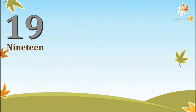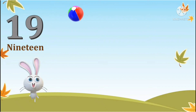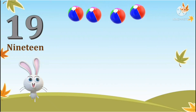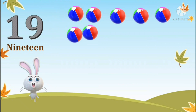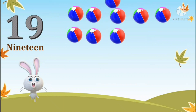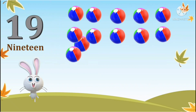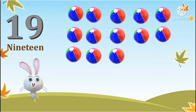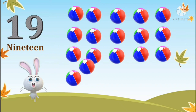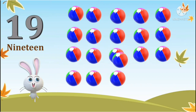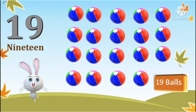Next number we have number 19. Now let's count 19 balls. 1, 2, 3, 4, 5, 6, 7, 8, 9, 10, 11, 12, 13, 14, 15, 16, 17, 18, 19. So there are 19 balls.